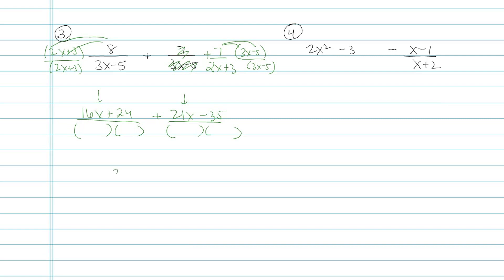16 plus 21, that's going to be 37x. And then for my constants, I have 24 minus 35, which is negative 11. That's my numerator. My denominator, remember, was 2x plus 3 multiplied by 3x minus 5. So I would pause here and see if there's anything on top that I could factor out, maybe cancel with a denominator, but there's not. So I could leave this as my final answer. That's usually fine.